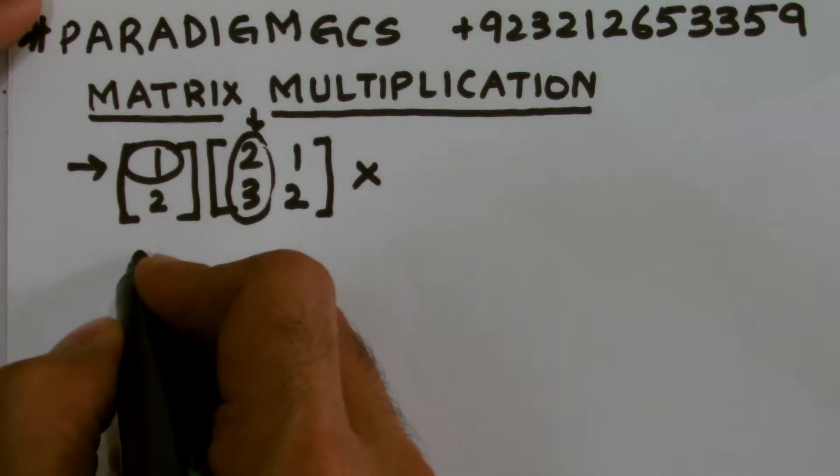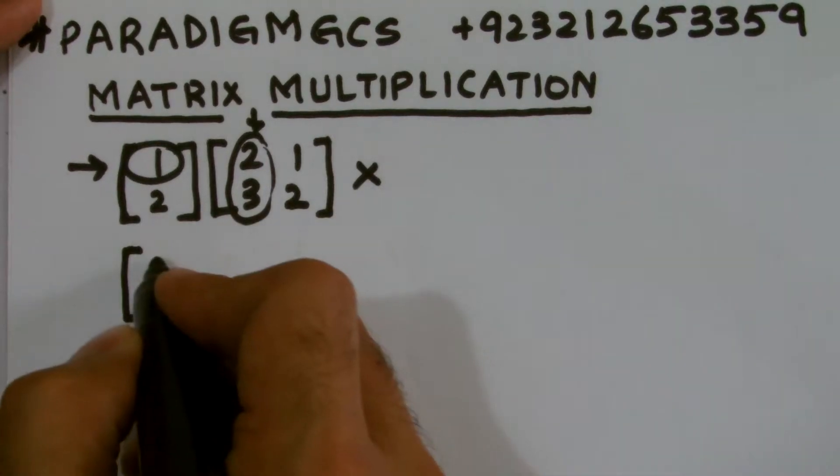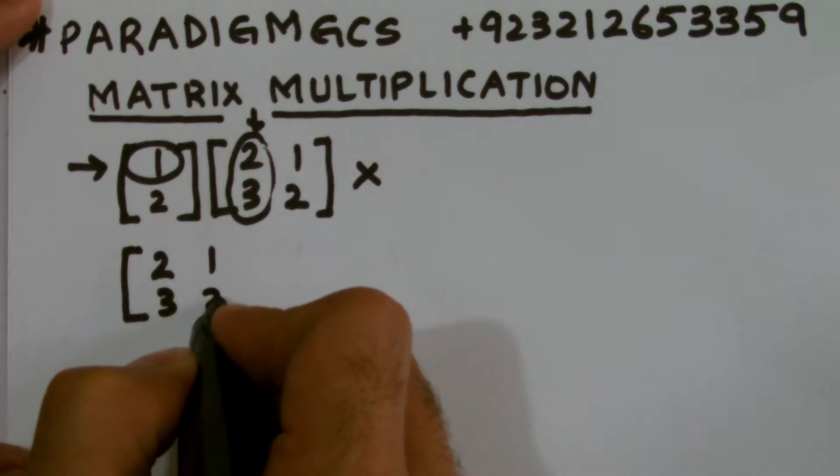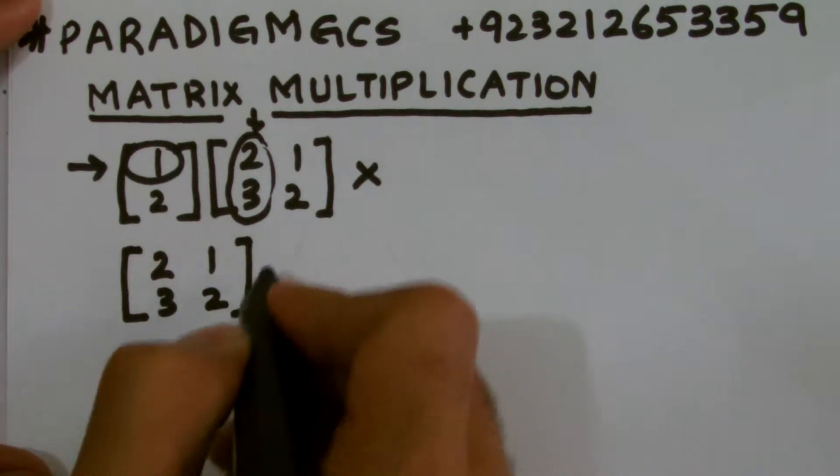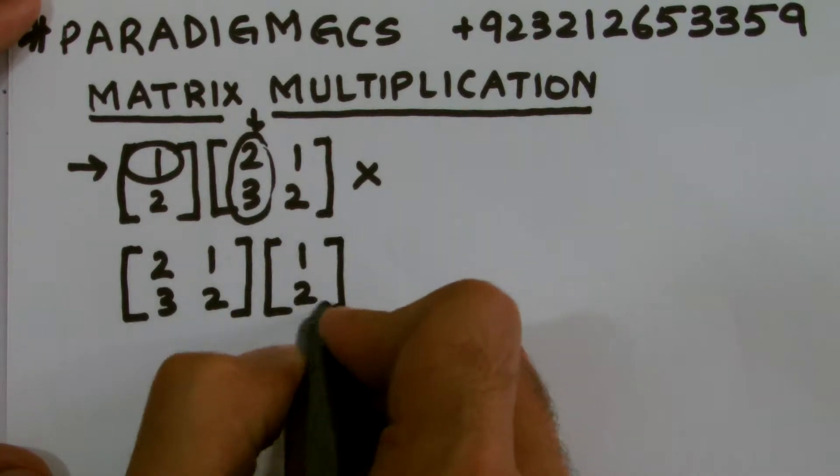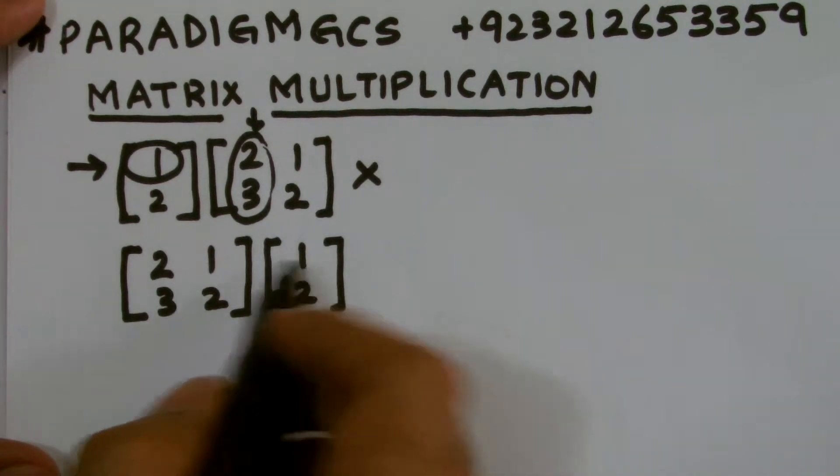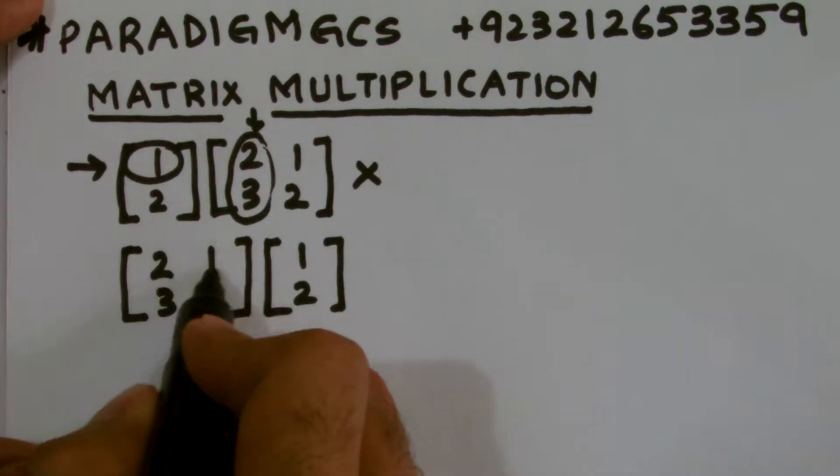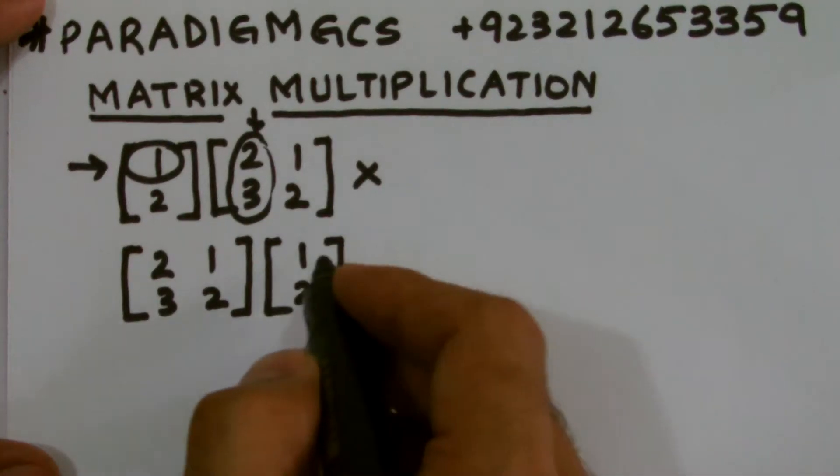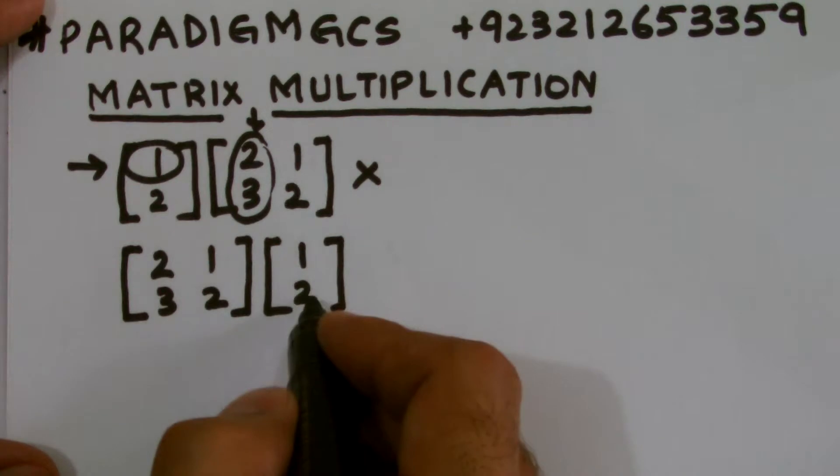Whereas if I change the order, if I consider the square matrix first, if I write 2, 3, 1, 2, the square matrix first, and then the column matrix, then it becomes a possible case. How exactly? First we check if it's possible or not. We are having two elements in the first row, we are having two elements in the first column, I mean in the only column matrix, so this is very much possible. We are having identical number of elements in row and column.